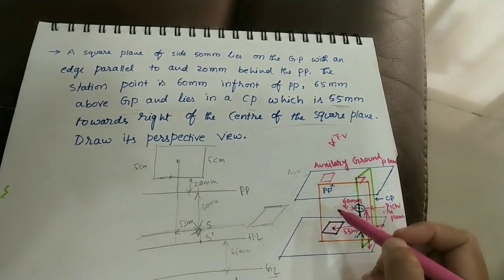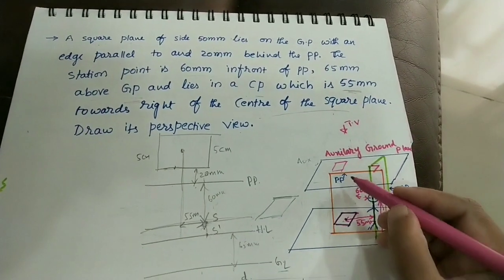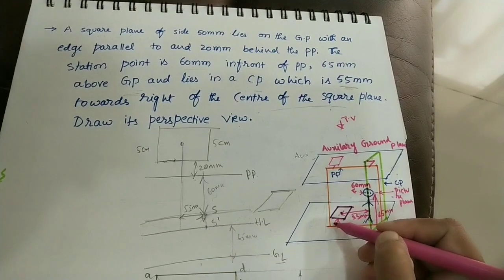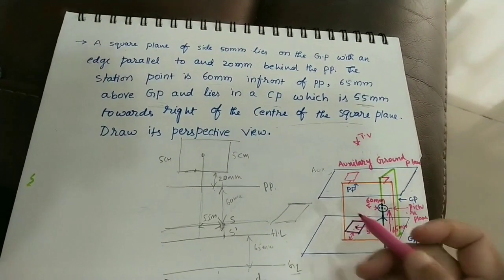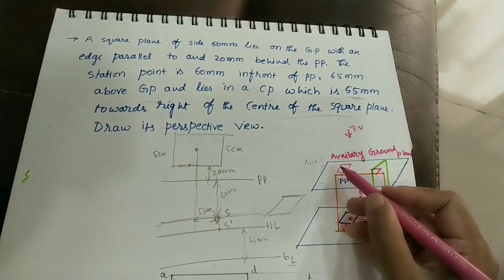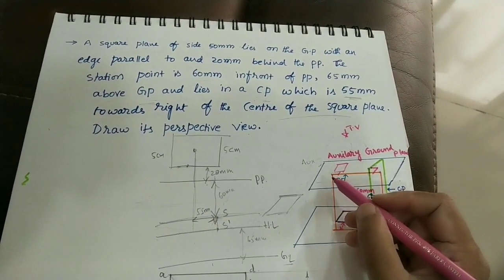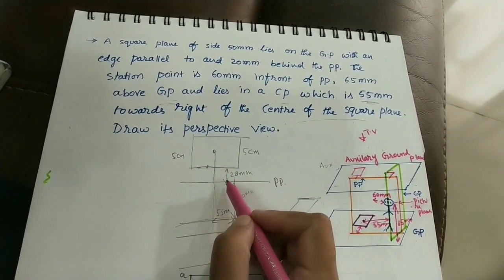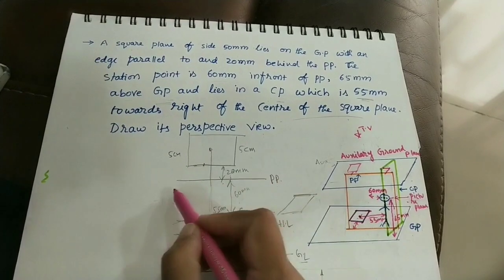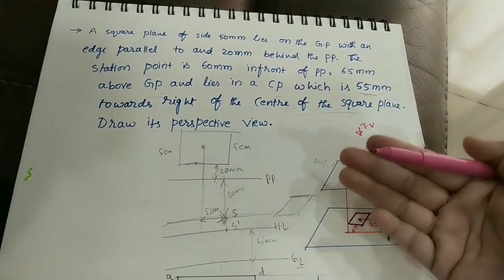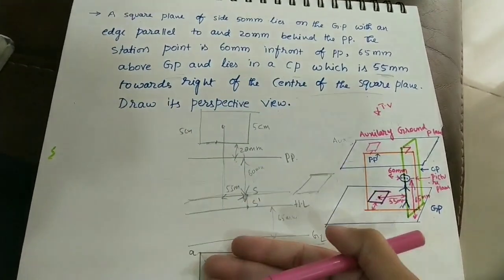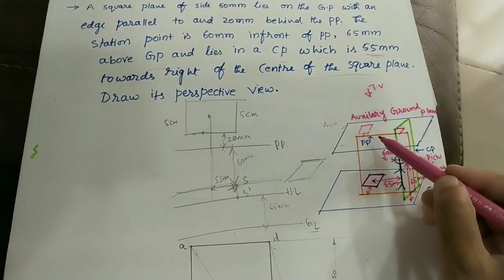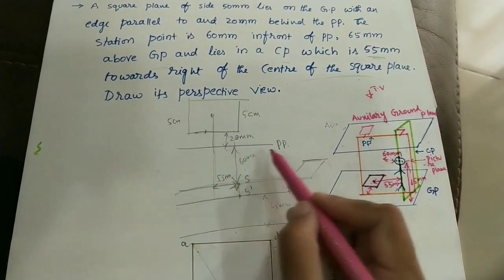After the 20 mm gap, we can see the PP line in the top view. The square is horizontal but we are tilting the diagram because we are doing everything in 2D view. The square is seen below the PP by 20 mm, and we mark the PP line.